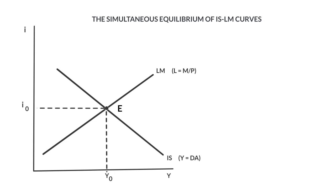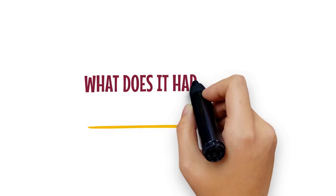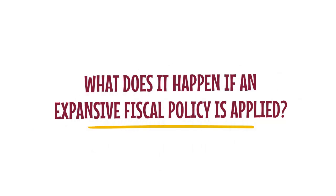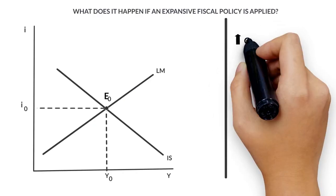What does it happen if an expansive fiscal policy is applied? For example, if public expenditure increases. If public expenditure increases, the IS curve shifts to the right until the curve IS prime.